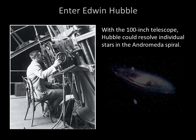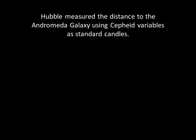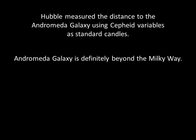Even better was when he could make out Cepheid variables in Andromeda. He used Henrietta Leavitt's period-luminosity relation to estimate the luminosities of the Cepheids, and from that he was able to measure the distance to the Andromeda galaxy. Although Hubble underestimated the true distance by about half, he still found that Andromeda was far beyond the Milky Way. The Andromeda nebula was, in fact, a separate galaxy.